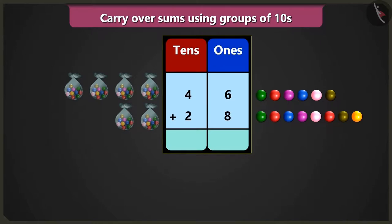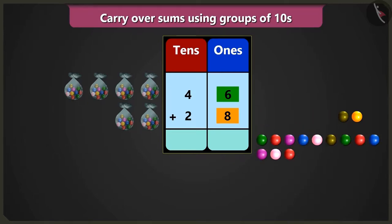Now in the box of ones, to add 6 ones and 8 ones, after 6, 7, 8, 9, 10, 11, 12, 13 and 14 marbles, what we get?